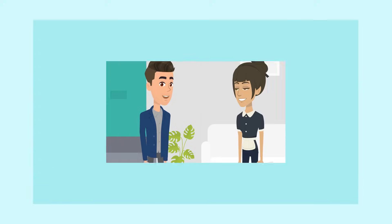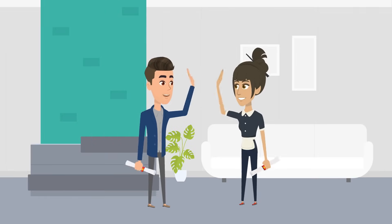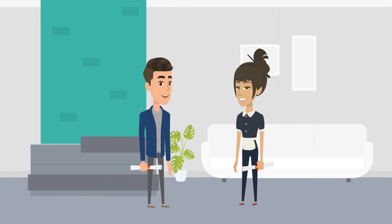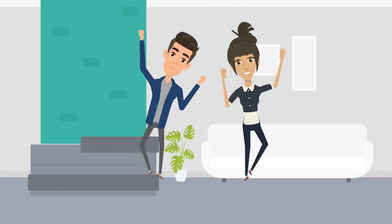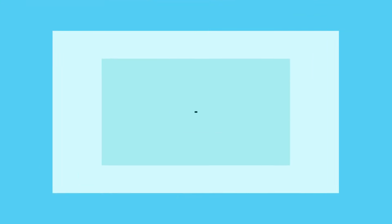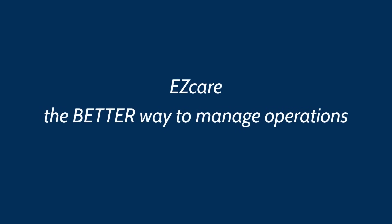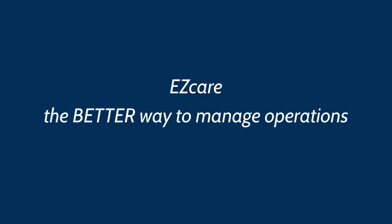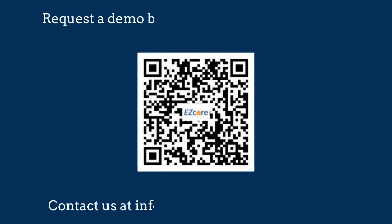By tracking and expensing every item, you can easily turn inventory into a profit center. EZ Care — the better way to manage operations.